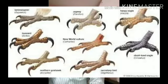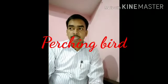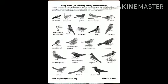Sparrow, crow, and parrot — these birds have feet and claws that help them to perch. On the basis of their feet and claws, these birds are called perching birds. Their feet and claws help them to catch their prey and also help in movement.